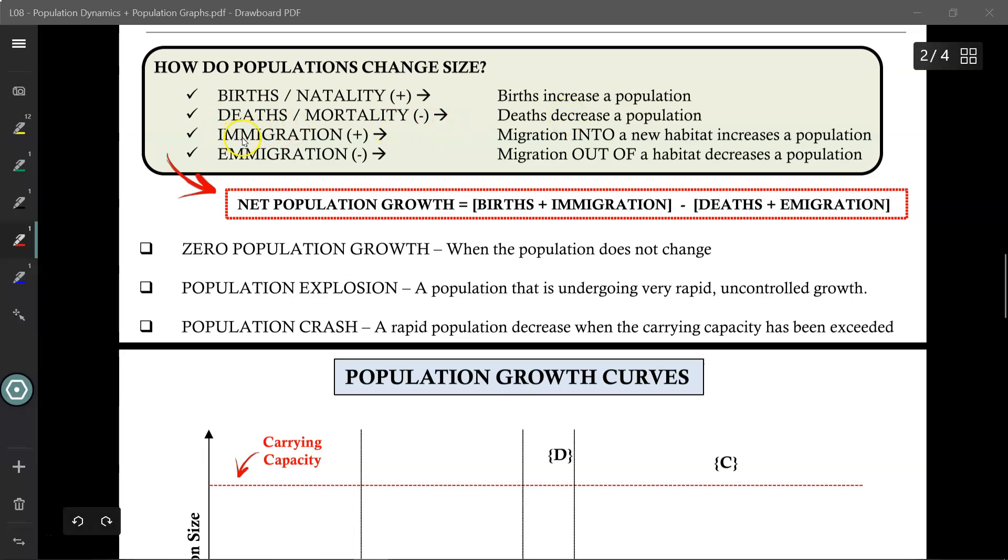Another way to increase a population is through immigration. That is migrating into a new habitat to increase a population. And the opposite of immigration is emigration, when you leave your habitat to go somewhere else. Together, these factors are used to calculate the net population growth. Alright, to see what is happening to your population. Is it increasing or is it decreasing overall?